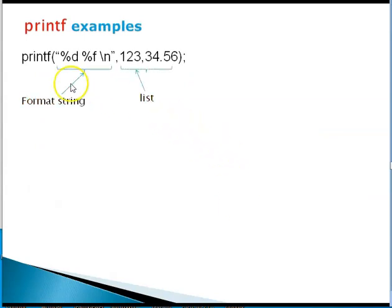In this example, you have a printf statement and you have two items in the list: 123 and 34.56. Correspondingly there are two things here, percent d and percent f. This percent d corresponds to the first item in the list, percent f corresponds to the second item in the list.